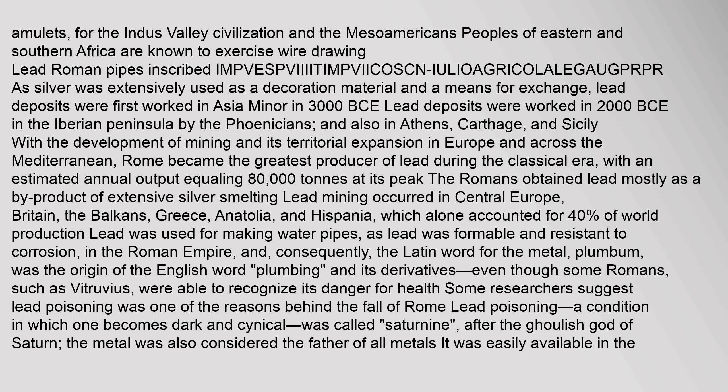Most other lead minerals are normally related to galena; for example, boulangerite (Pb5Sb4S11) is a mixed sulfide derived from galena; anglesite (PbSO4) is a product of galena oxidation; cerussite or white lead ore (PbCO3) is a decomposition product of galena. Zinc, copper, arsenic, tin, antimony, silver, gold, and bismuth are common impurities in lead minerals. Lead deposits were first worked in Asia Minor in 3000 BCE, and in 2000 BCE in the Iberian Peninsula by the Phoenicians, and also in Athens, Carthage, and Sicily.